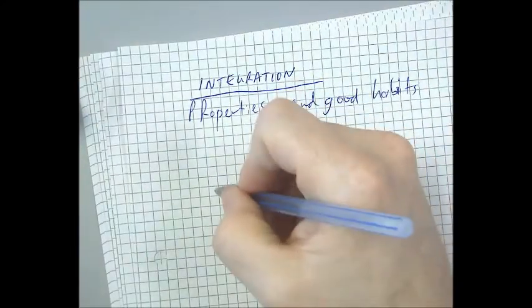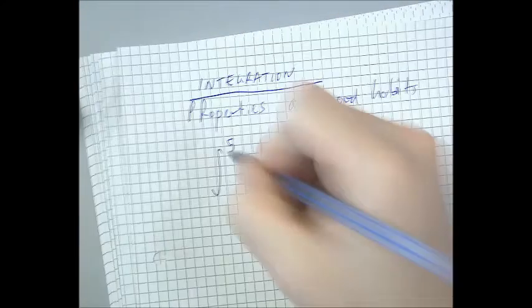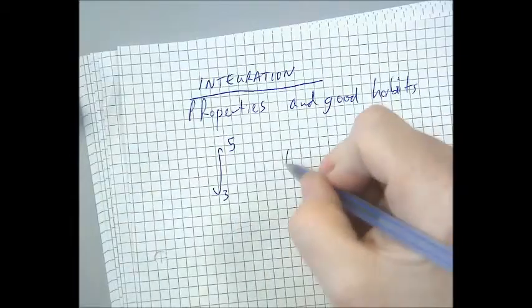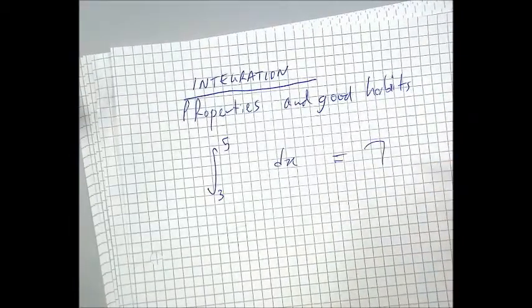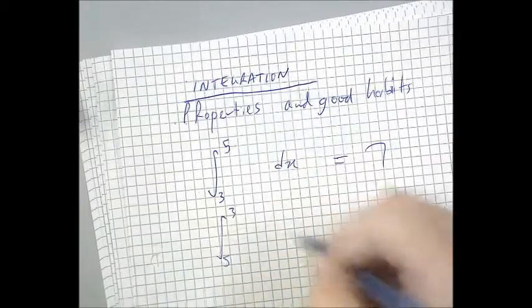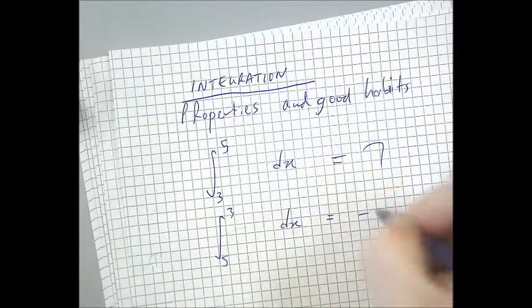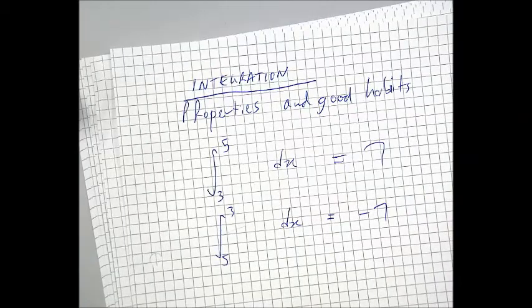Okay, so first thing is, if you've worked out something with 5 and 3, and you get 7, if you swap those, you'll get negative 7. Okay? So that's the first thing.